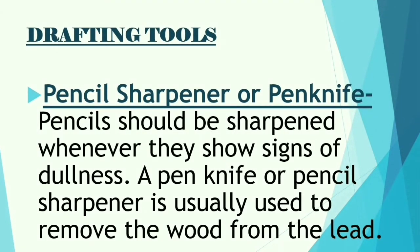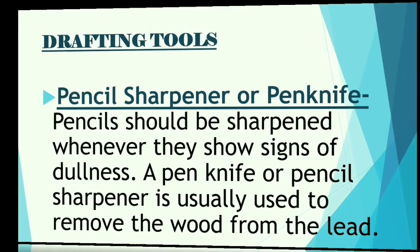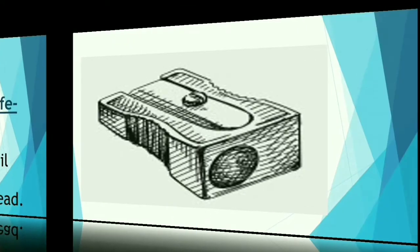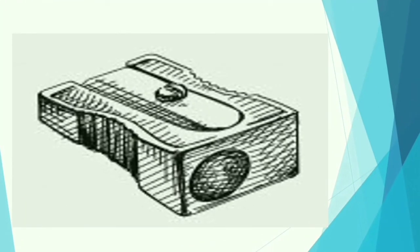Next is the pencil sharpener or pen knife. Pencils should be sharpened whenever they show signs of dullness. A pen knife or pencil sharpener is usually used to remove the wood from the lead. So this is what's called a sharpener. If you don't have one, you can use a knife, a cutter, or a slicer — those can be used as well.